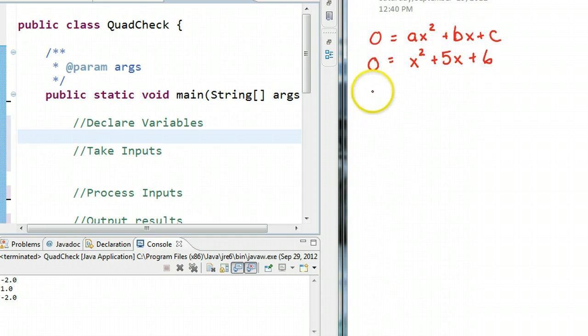A couple ways to solve this. One way, which we often use, is we factor, and we say x plus 2, x plus 3, and therefore we get x is equal to negative 2, or x is equal to minus 3.